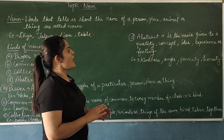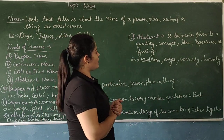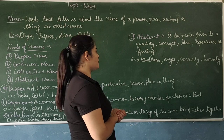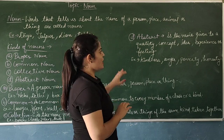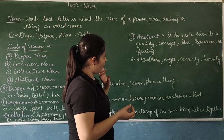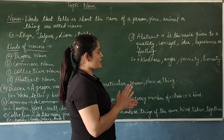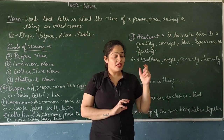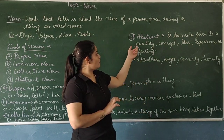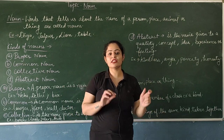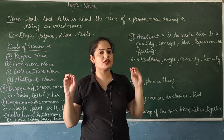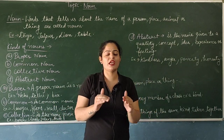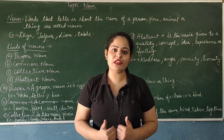Fourth is abstract noun, which is the name given to a quality, concept, idea, experience or feeling. The main point about abstract noun is that we cannot see it — we can only feel it.